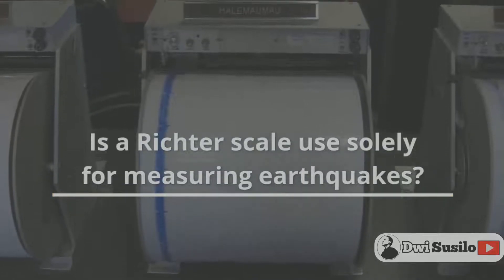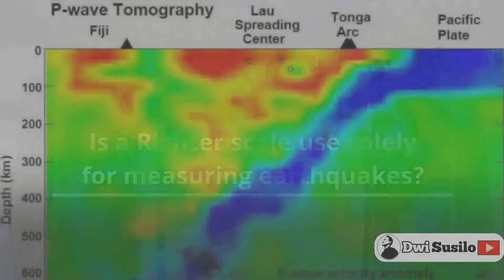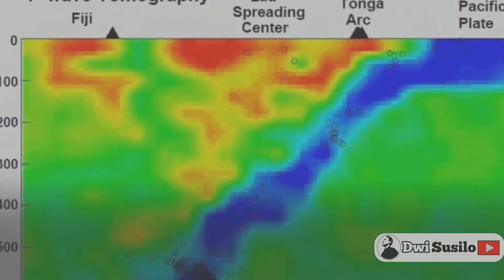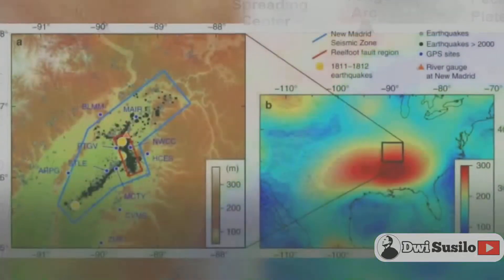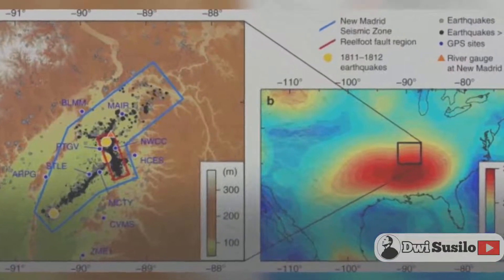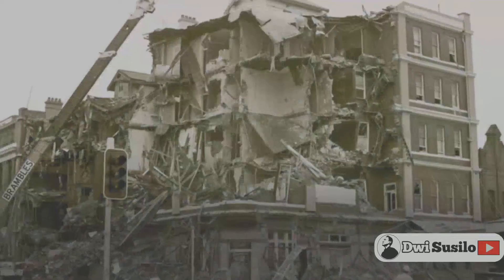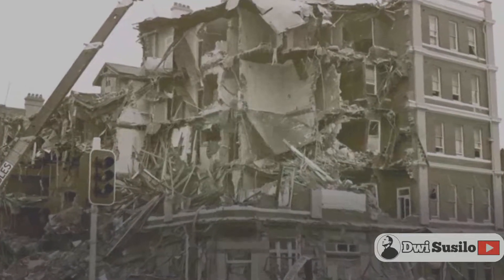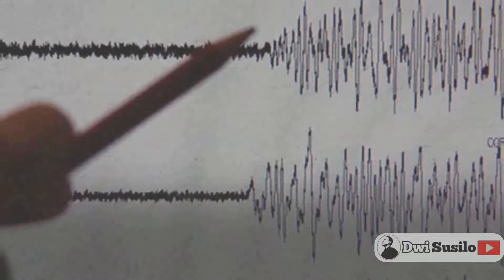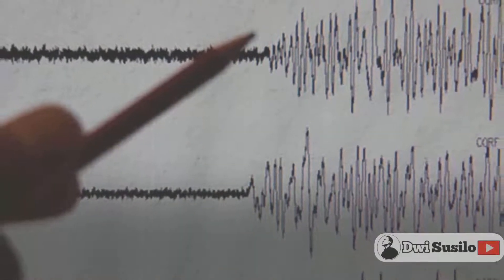Is the Richter scale used solely for measuring earthquakes? The scale itself can be used to decide how powerful any act which has impacts on the earth's surface is. For example, both the Nagasaki atomic bomb explosion and an earthquake in Lancashire, United Kingdom in 2008 measured the same on the Richter scale — approximately magnitude 5, indicating that 32 kilotons of seismic energy were recorded during these events.